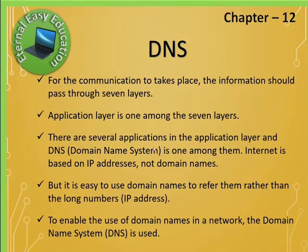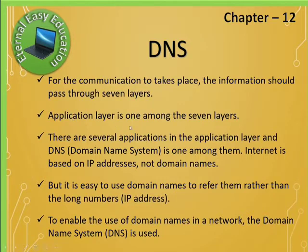Let's see an overview of DNS. For communication to take place, information should pass through 7 layers. TCP/IP has 4 layers and the OSI model has 7 layers, but both models have an application layer. There are several applications in the application layer, and DNS is one of them. The internet is based on IP addresses, not domain names.